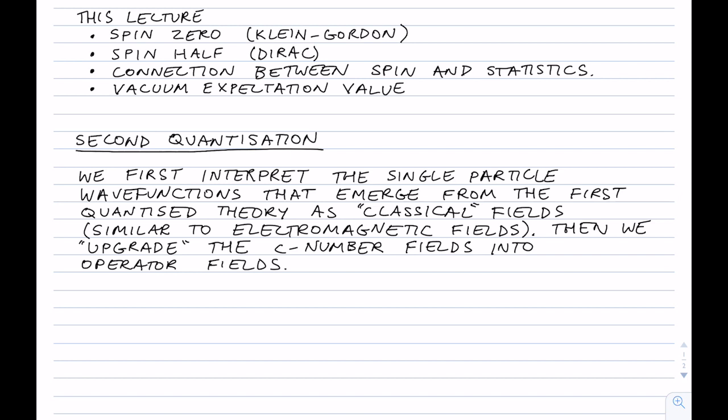It's worth noting that for electromagnetism there is no first-quantized theory. The reason for this is that photons have mass equal to zero, so photon number is never conserved even for very small energy, and that's why we can't have a first-quantized theory.